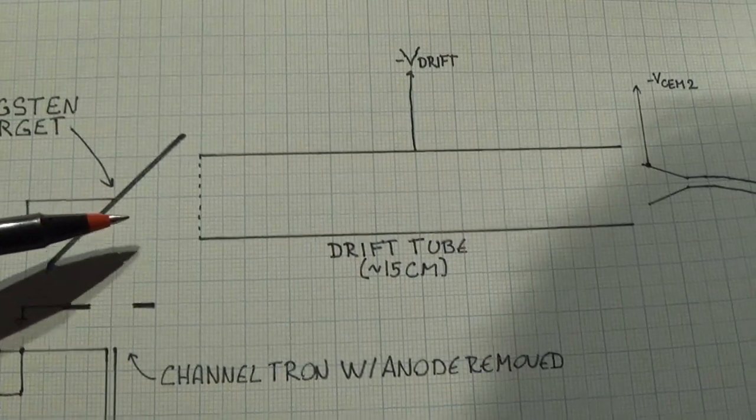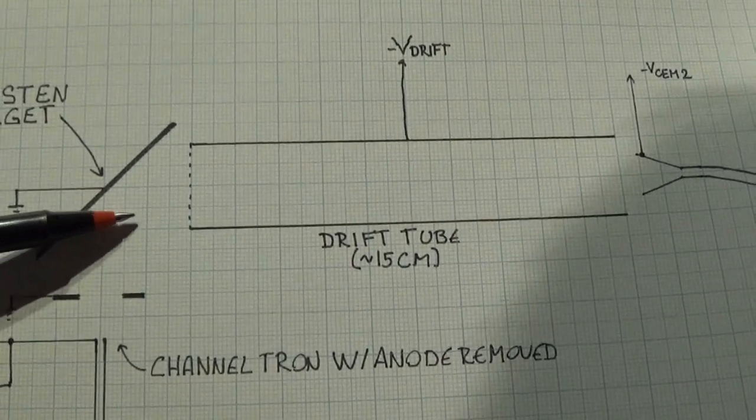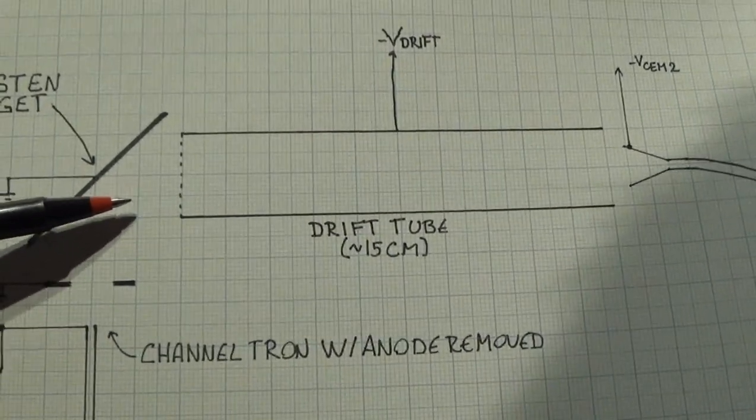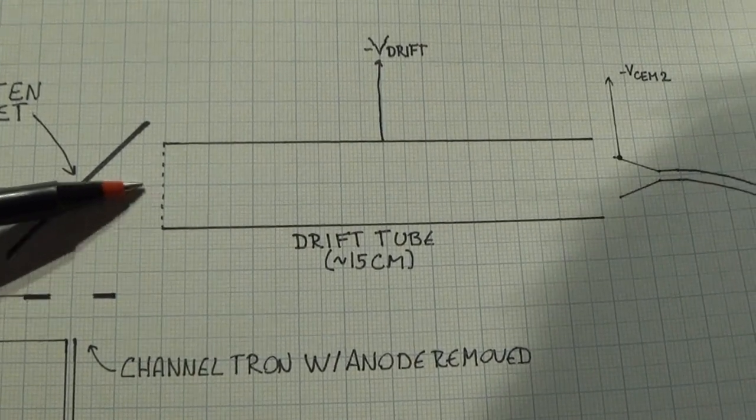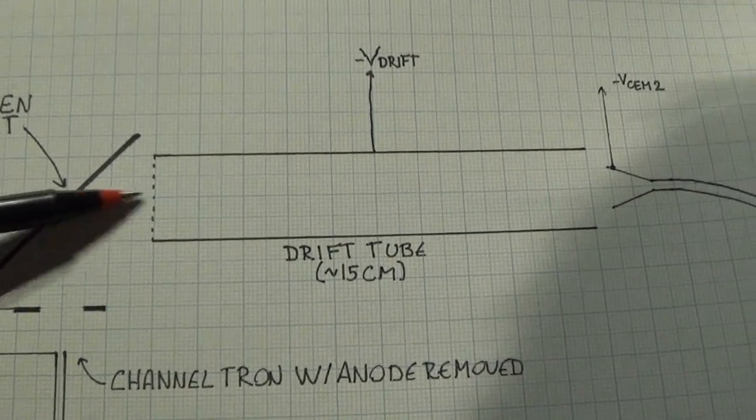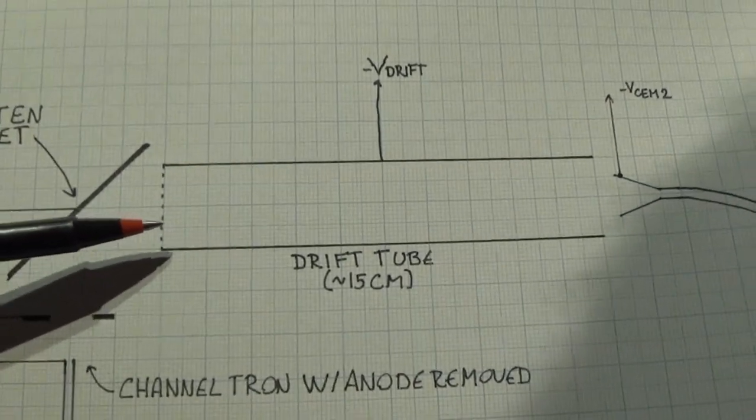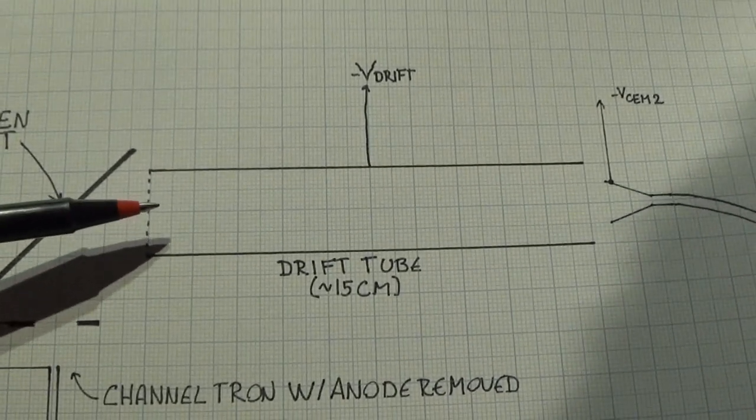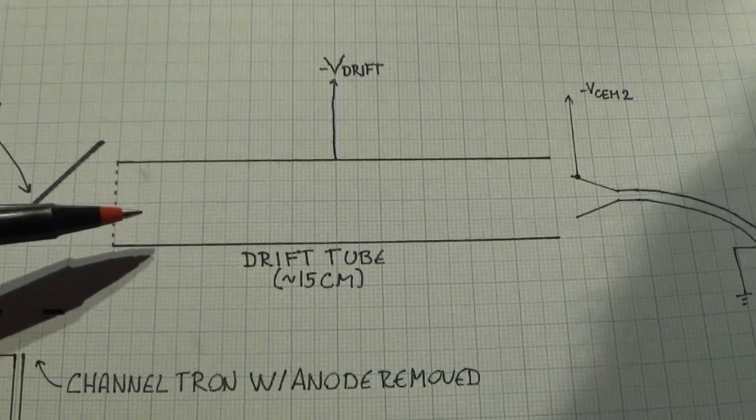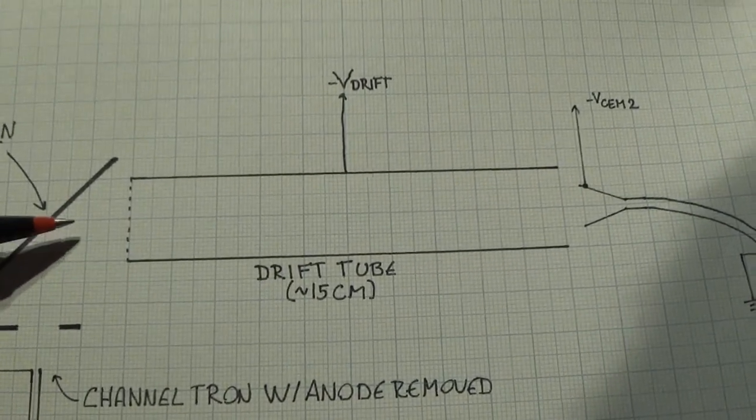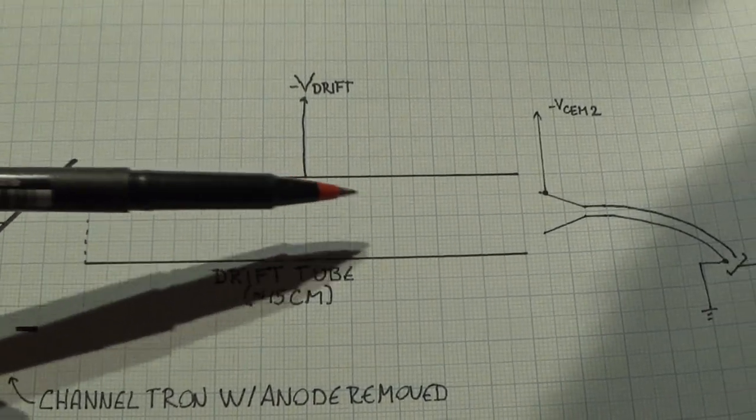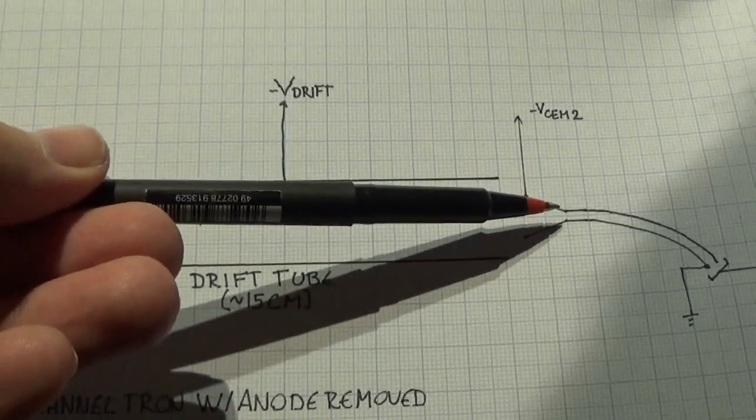These ions will then be positive. They'll be stripped off some electrons. These positively charged ions will then be attracted towards the negative charge of this drift tube. I'm not completely sure what drift tube voltage to use. Maybe a couple of hundred volts.